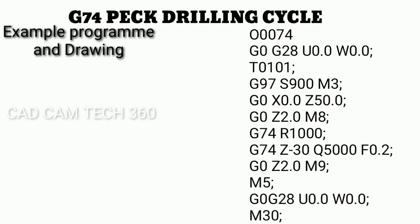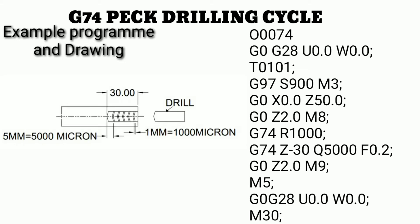The next step is G0 Z2.0 M8 — here Z2.0 is a positive value meaning a 2mm gap between the part and the drill bit, and M8 turns the coolant on. This is the G74 peck drilling cycle.